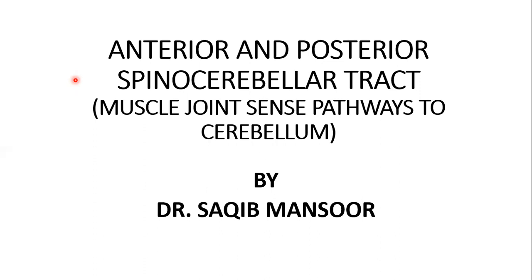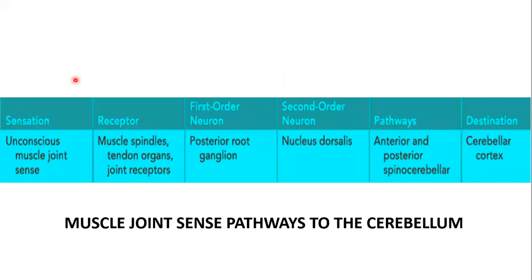These sensations carried to the cerebellum via anterior and posterior spinocerebellar tracts are the muscle joint sense pathways. The sensation is the unconscious muscle joint sense. The receptors involved are the muscle spindles, tendon organs, and joint receptors. The first order neuron is the posterior root ganglion. The second order neuron is the nucleus dorsalis, which is the Clark's column. The pathway is the anterior and posterior spinocerebellar tracts, and the destination is the cerebellar cortex, not the cerebrum.